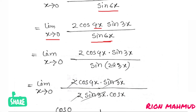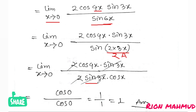Now applying to the denominator: sin6x can be written as 2 sin3x cos3x. So the expression becomes 2 cos4x sin3x divided by 2 sin3x cos3x. The 2 and sin3x cancel, leaving cos4x divided by cos3x.